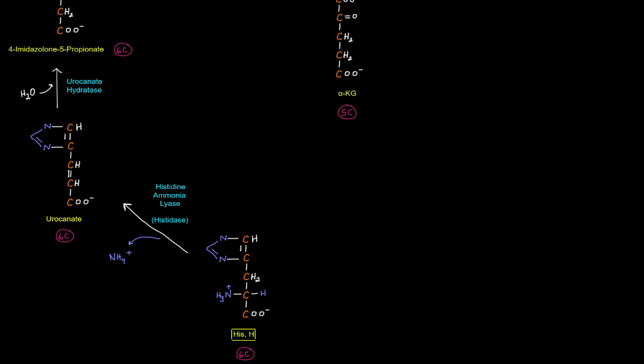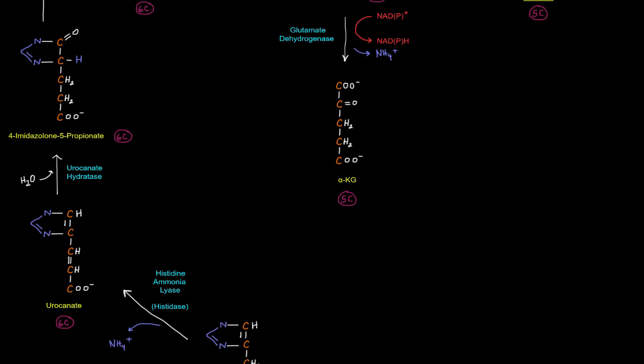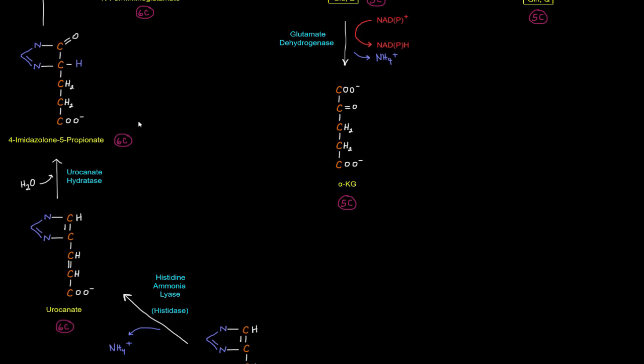And that urocanate is going to be acted on by urocanate hydratase. And what that'll do is that'll get rid of this double bond here, make that a single bond, and also put a carbonyl at this carbon up here. So that's how we get that carbonyl. And we've got this single bond here now to give us this molecule, 4-imidazolone-5-propionate.